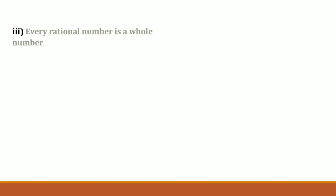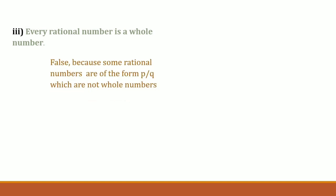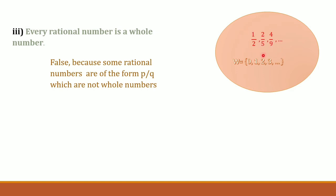The next sub-question is: every rational number is a whole number. Every whole number can be a rational number, but every rational number cannot be a whole number. Hence the statement is false, because some rational numbers of the form p upon q are not whole numbers — for example, 1 upon 2, 2 upon 5, 4 upon 9, etc. However, some rational numbers like 4 upon 2 (which simplifies to 2) and 9 upon 3 (which simplifies to 3) are whole numbers.